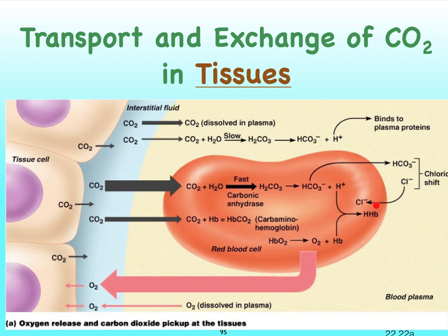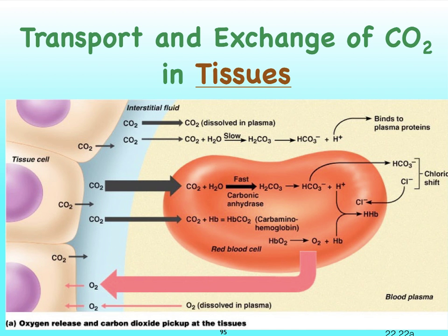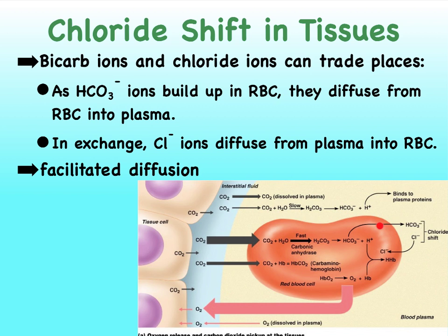Why does the chloride shift happen? By these bicarbonate ions moving into our plasma, they can help buffer it. If hydrogen ions start to accumulate in our plasma due to metabolically active tissues, these hydrogen ions that can't find plasma proteins to bind with could potentially bind to bicarbonate ions and push the reaction to the left — eventually producing more carbon dioxide, which can then be blown off. This process where bicarbonate ions trade places with chloride ions between the red blood cells and plasma is the chloride shift, occurring by means of facilitated diffusion.